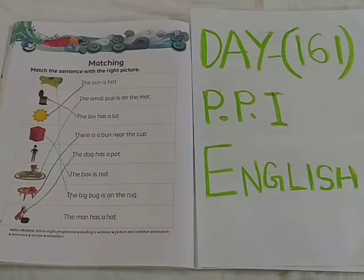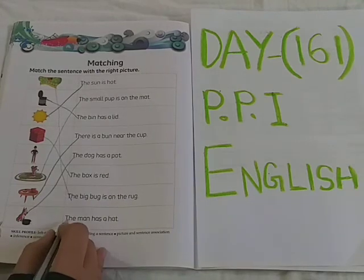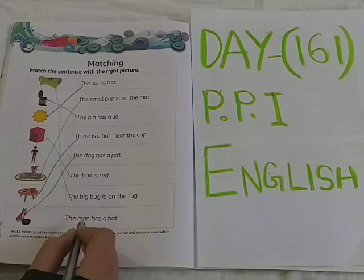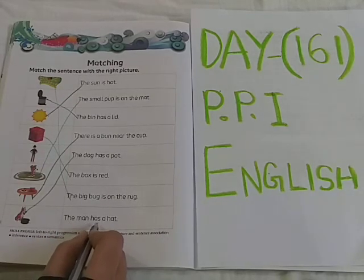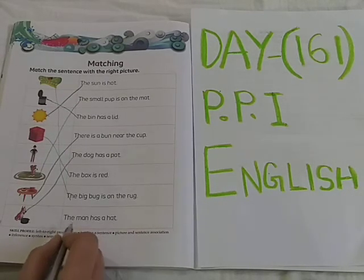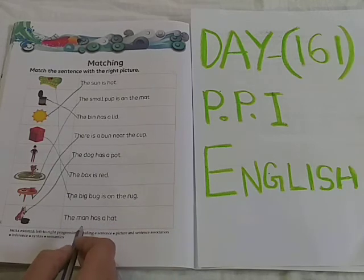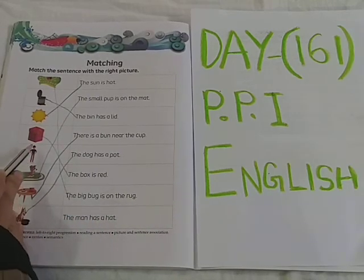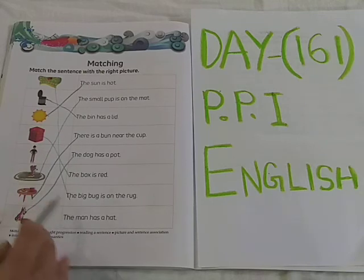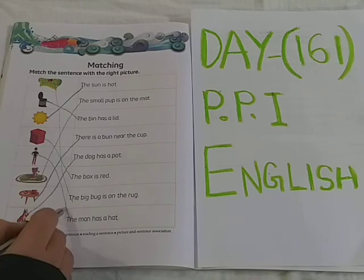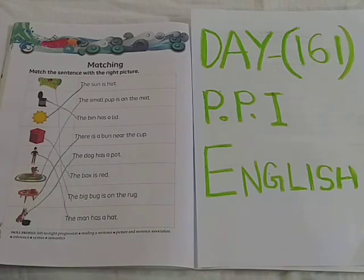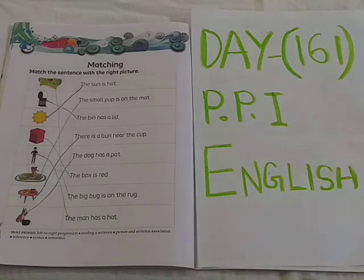See the next sentence now. T-H-E — The. M-A-N — Man. The man. H-A-S — Has. A. H-A-T — Hat. The man has a hat. Where is it? This man is having a hat, you can see here. The man has a hat. So this sentence is matching with this picture. The same you have to do in your homework also children. Read the sentences and match with the correct picture. Thank you all.